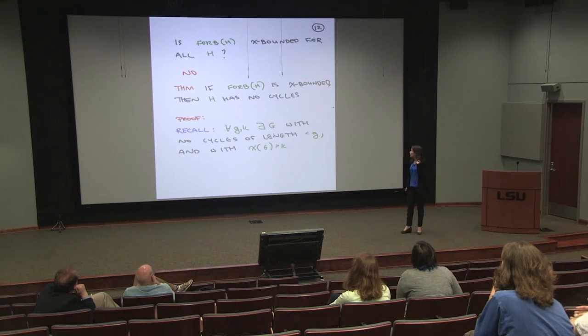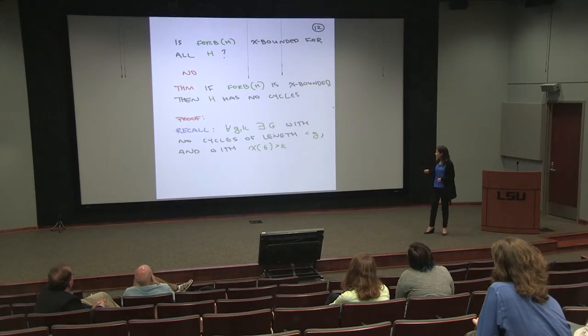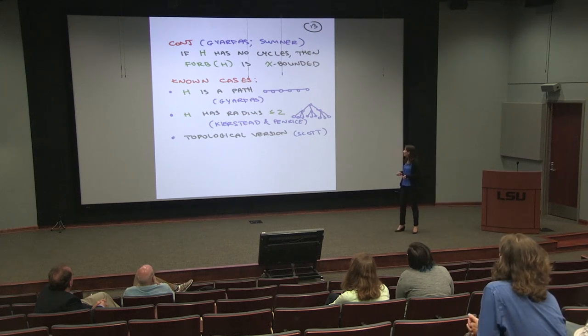For example, if you make H a triangle, the Mycielski construction tells you that Forb(H) is not chi-bounded — it builds triangle-free graphs with arbitrarily large chromatic numbers. In fact, more is true: if Forb(H) is chi-bounded, then H doesn't have any cycles. To see this, remember Erdős's theorem — graphs with arbitrarily large chromatic numbers and no short cycles. If H has 20 vertices and contains a cycle, I can find graphs with no cycles of length less than 21 and arbitrarily large chromatic number. These graphs don't contain H, so they're all in Forb(H), so Forb(H) is not chi-bounded. Therefore, if Forb(H) is chi-bounded, then H has no cycles.